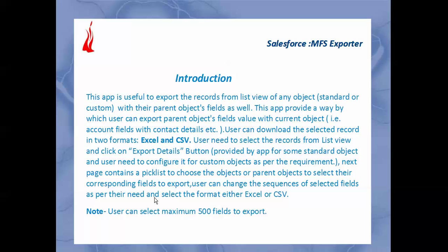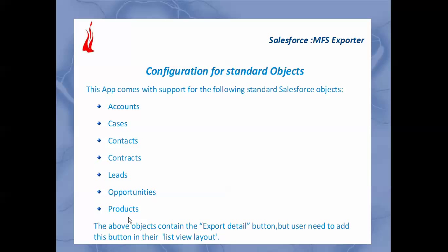There is a limitation in selecting the fields: the user can select a maximum of 500 fields to export. The second point is configuration for the standard object. This app provides a custom list view button named 'Export Details' to export data from any standard list view.